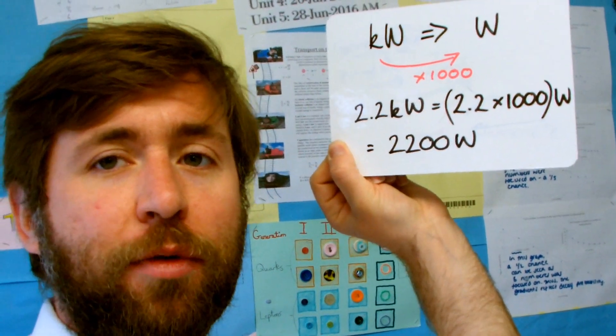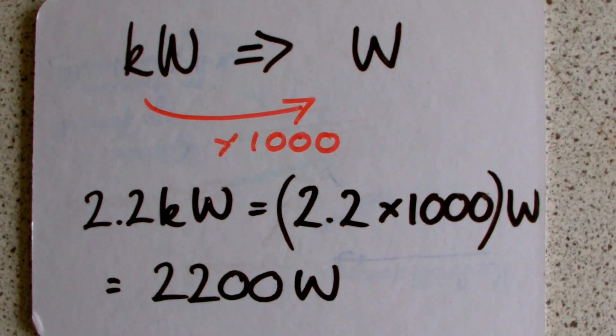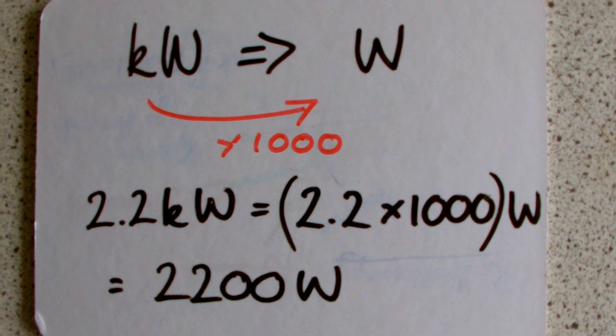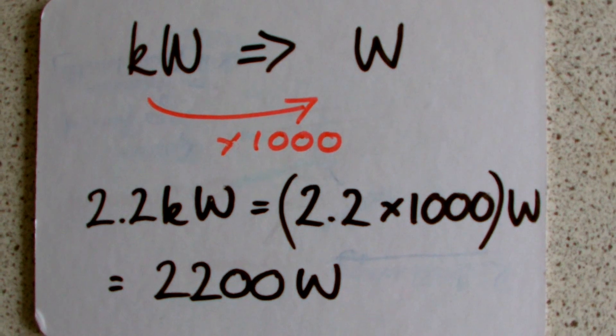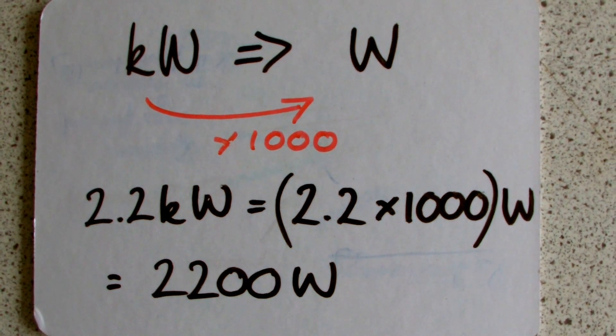If you've got 2.2 kilowatts, then all you need to do is think of it as 2.2 times a thousand watts. So 2,200 watts.